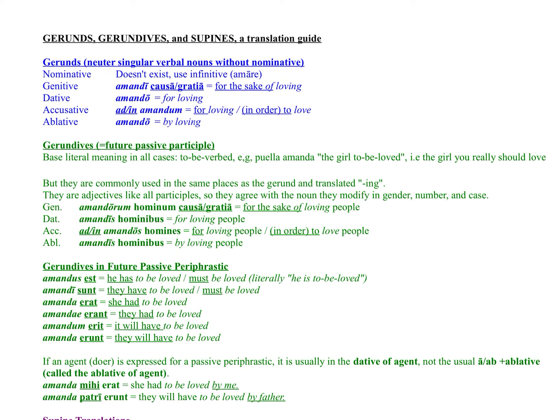Gerundives are commonly used in the same places as the gerund, and they're often translated with the -ing ending, even though literally they mean 'to be verbed.' For example, amandorum hominum causa or amandorum hominum gratia literally means 'for the sake of people to be loved,' but that makes no sense in English. So you translate it as if amandorum were a gerund and hominum were a direct object homines, giving you 'for the sake of' or 'for the purpose of loving people.'